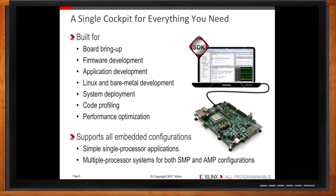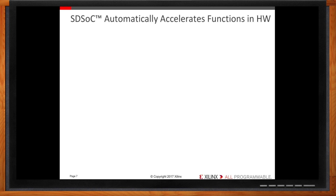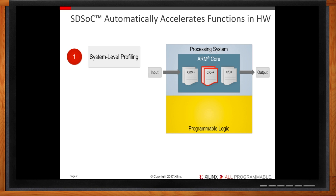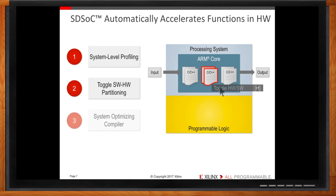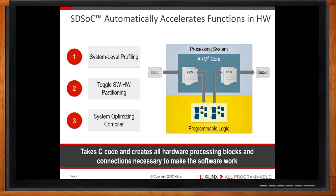How is this different than software development kits from other vendors? One key component: embedded in SDK is SDSoC, a tool that allows software engineers to convert C/C++ applications into programmable hardware. SDSoC runs system-level profiling — your application is executed and code is analyzed for processor cycle usage to determine which application functions are burning the most processing cycles. You can then select these functions and toggle them for hardware partitioning. When you recompile the code, SDSoC takes the C code and generates all the necessary hardware processing blocks into the programmable logic, and automatically creates and optimizes all the connections and bitstreams needed for the ARM processor to communicate with the new accelerator.